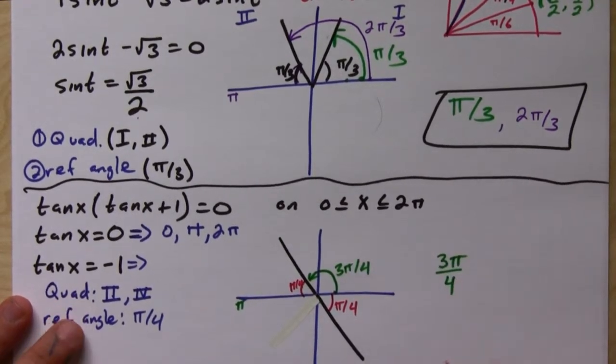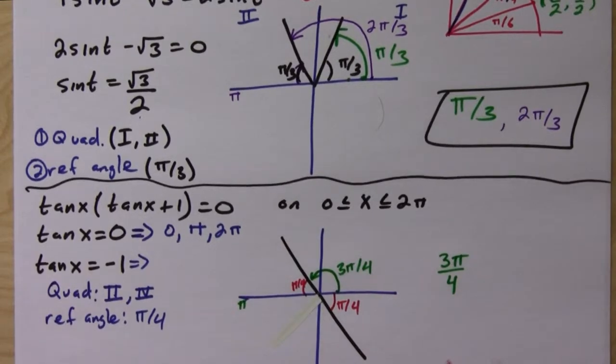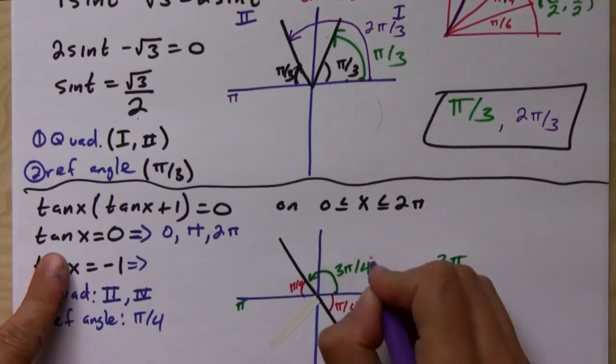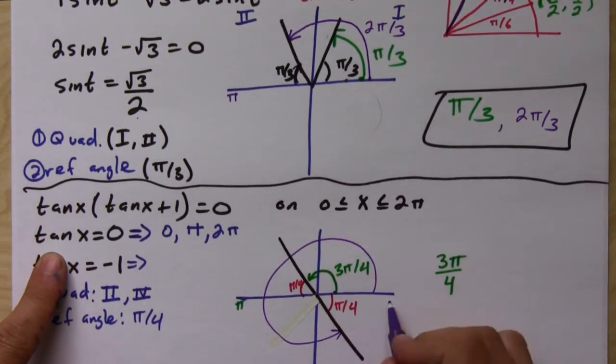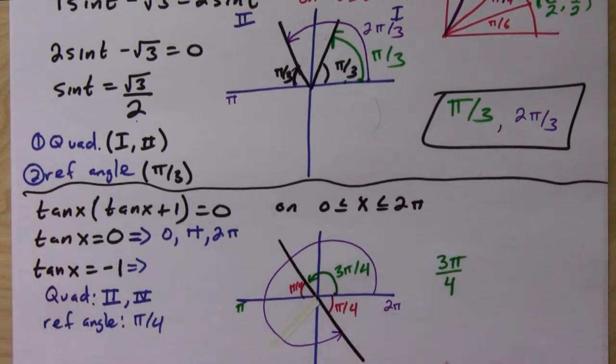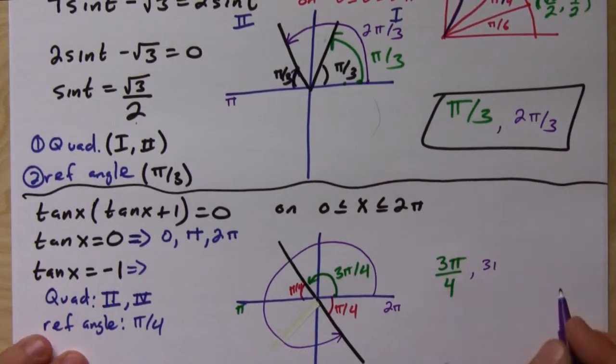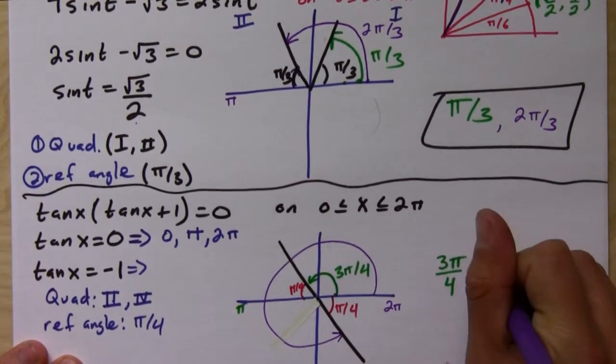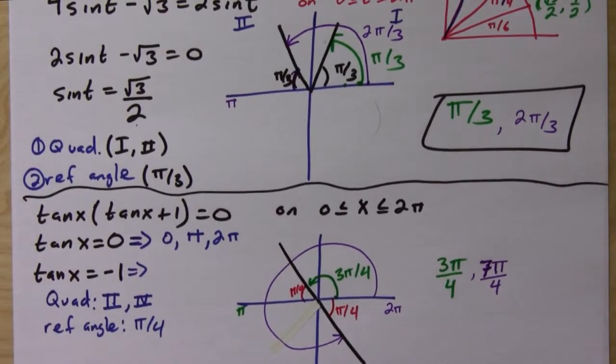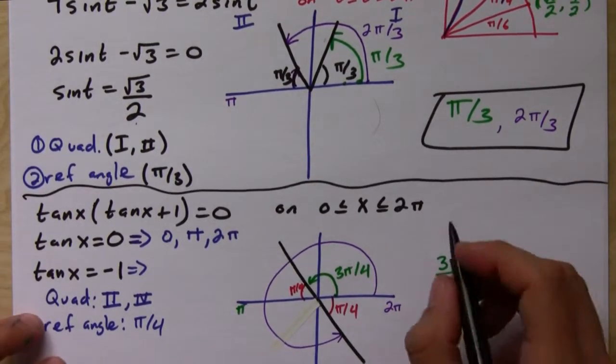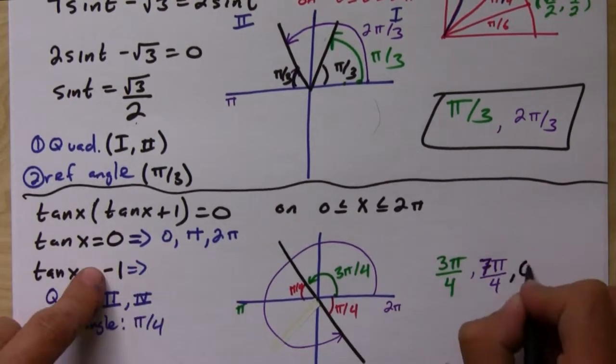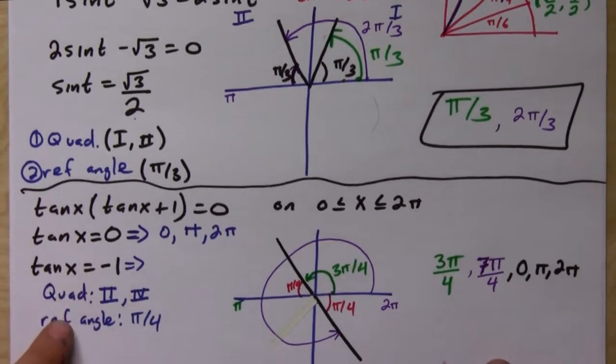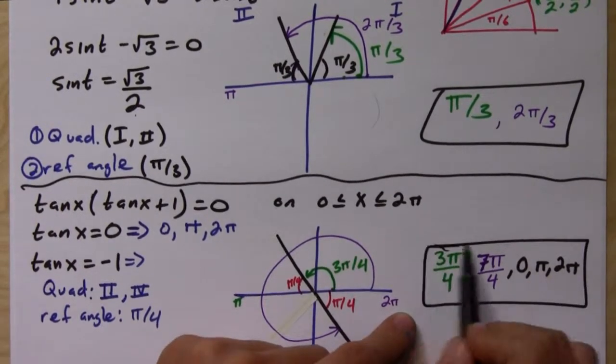So, that's one solution. And then, if you go from 0 all the way here. So, this would be, all the way to the end is 2 pi. And if you subtract pi over 4, you would get to 6 pi over 4 or 3, sorry, 7 pi over 4. And so, those are your solutions. It's 0 pi, 2 pi. And 3 pi over 4, 7 pi over 4. And that's it.